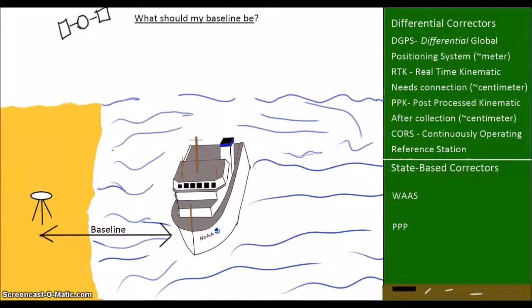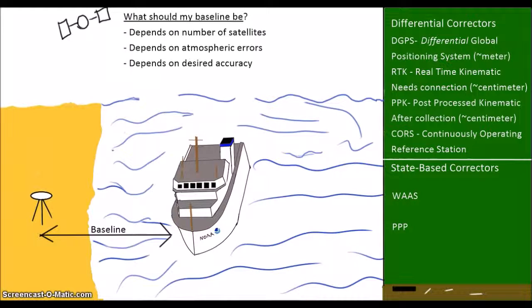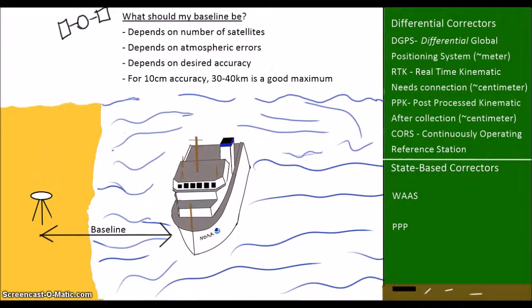How far is too far? Well, that depends on the satellites in the solution, the variability of the atmospheric error sources, and the desired accuracy. For accuracies less than 10 centimeters, maximum baselines of about 30 to 40 kilometers seem to work well.